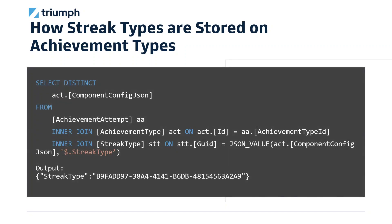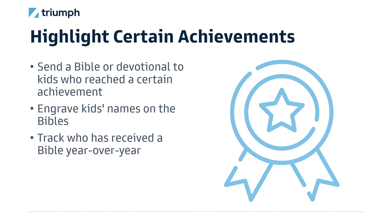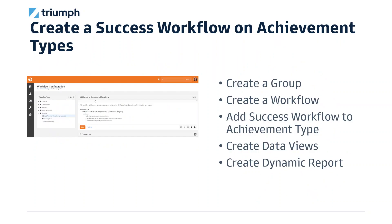If we run our simple query, we'll see a key-value pair for the streak type and how it's stored. Now that we can create our own reports around streaks and achievements, what other cool things can we do? Some achievements will naturally hold more weight than others. If a child reaches a certain achievement, it's an opportunity to celebrate it as a significant milestone. Use this opportunity to create a special celebration, like sending a child a great Bible or devotional.